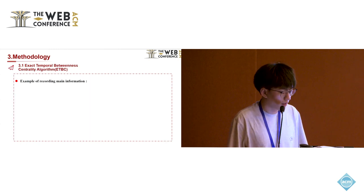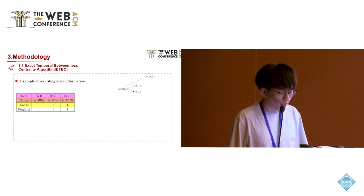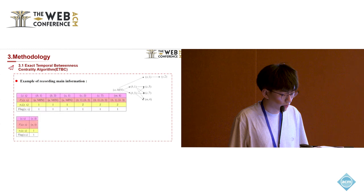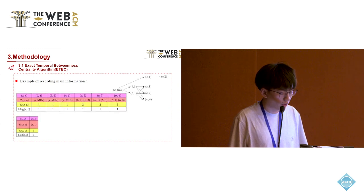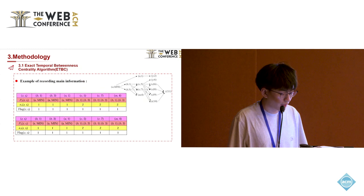I will illustrate an example of recording main information. When the optimal distance equals 1, we record information about B1, B3, and X1. When the optimal distance equals 2, we record C5, C7, M4, and Y2. When the optimal distance equals 3, we record other vertex instance information.